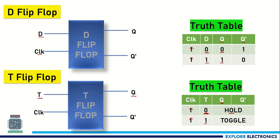If the input is given as 1, Q becomes Q bar. Means if 0 is the previous state, it will be changed to 1 when T is 1. And Q bar will be changed to Q. So Q and Q bar are going to be inverted when we give 1 from the T input.